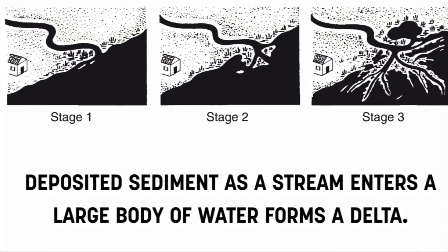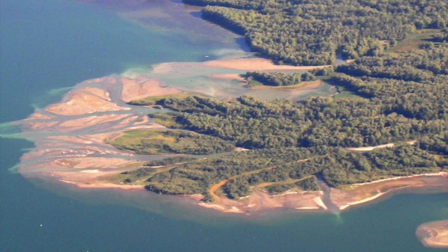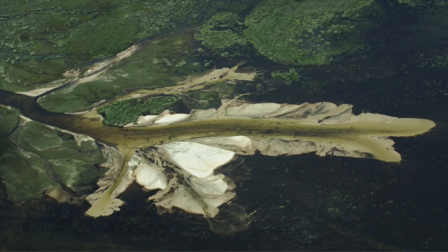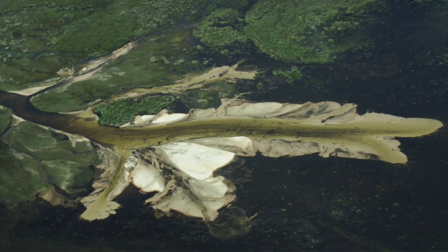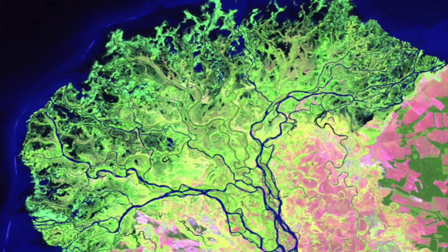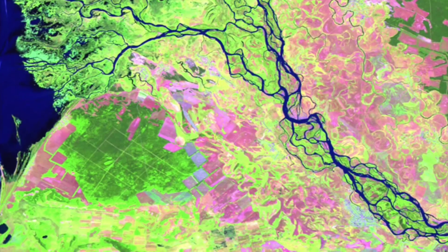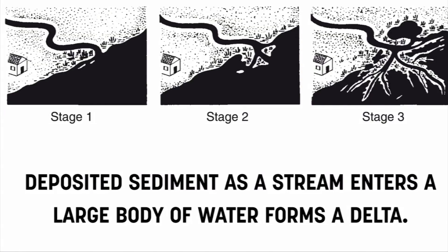Over time, deposited sediment entering a larger body of water starts to form a delta. As shown from stage one to stage three, a delta is a buildup of deposited material that over time becomes fertile ground — you can actually have soil develop and new tracts of land form. A river delta is deposited material at the mouth, or the end, of a river system.